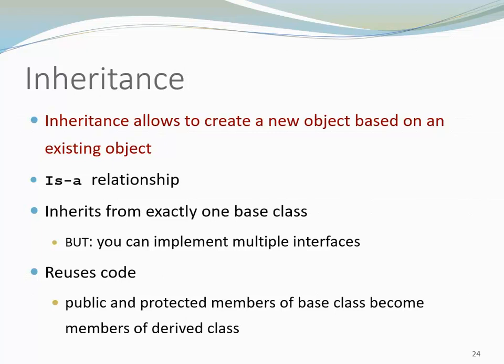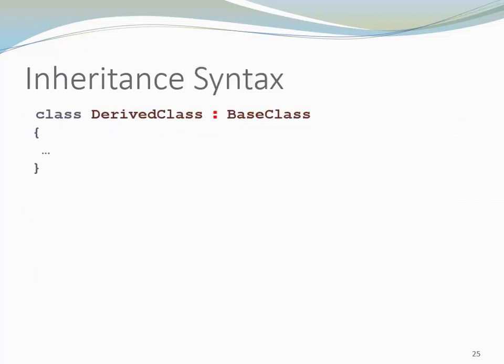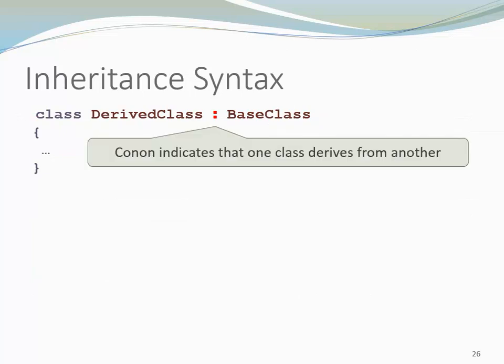Please keep in mind, though, that inheritance should not be used for any arbitrary form of code sharing. We only want to use inheritance between classes where the concept of an is-a relationship is given. Here is a look at the C-sharp syntax for inheritance. It looks similar to Java; however, we use the colon instead of the keyword extends.